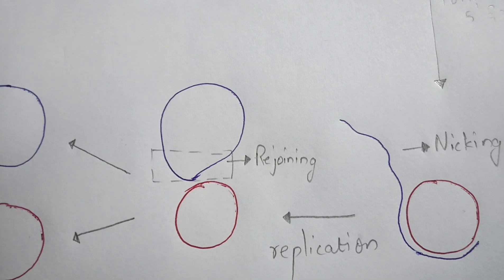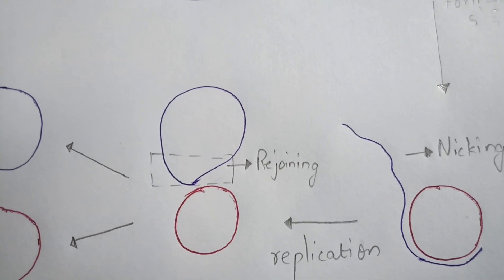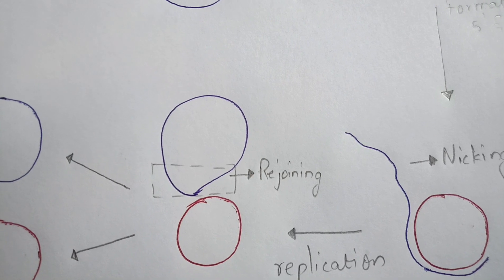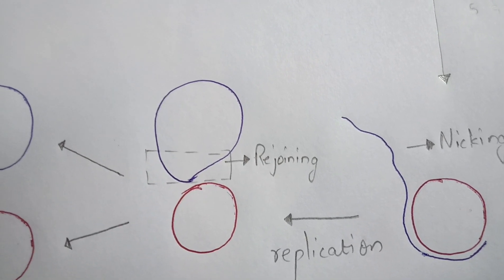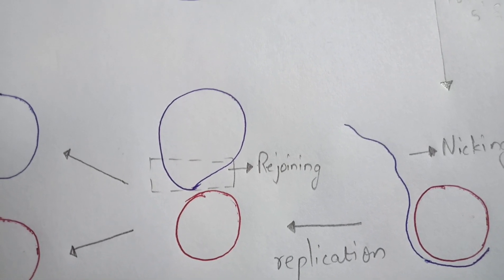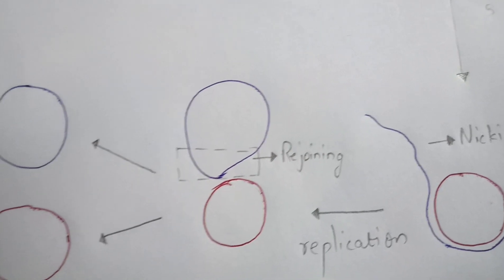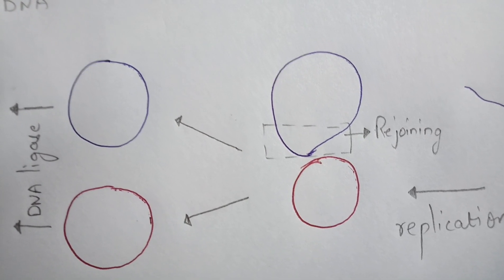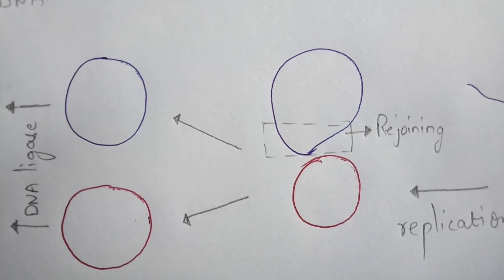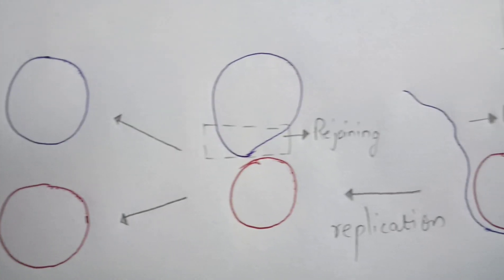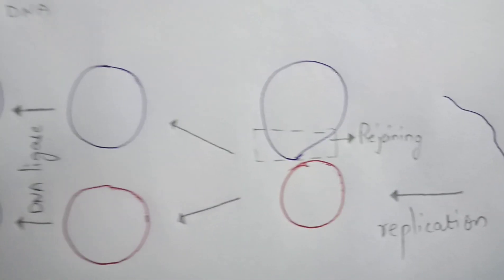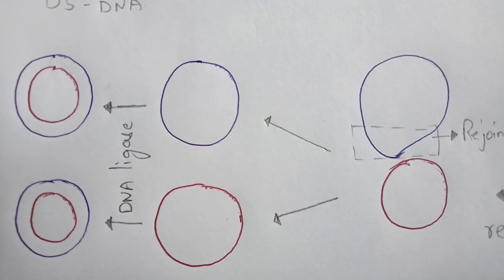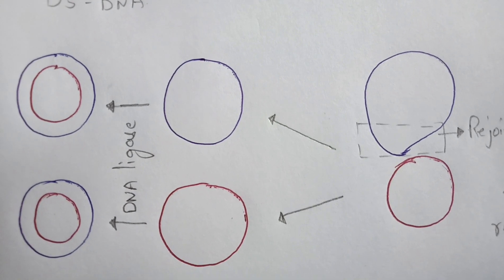The second strand escapes from the first strand due to the process called nicking. Then that second strand which has escaped will again rejoin and attain its original circular shape. The first strand remains as it is, but the second strand gets rejoined. After this process, both strands — the first strand (red) and second strand (blue) — get separated.